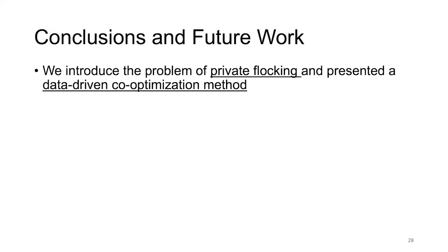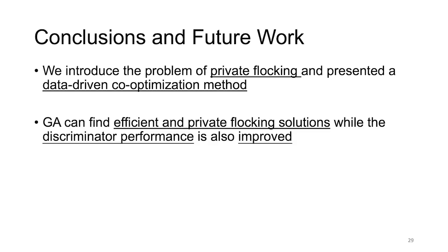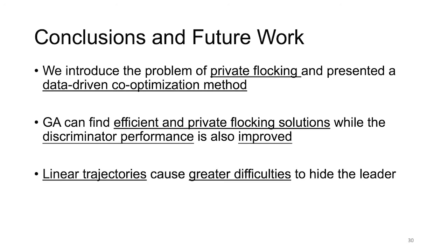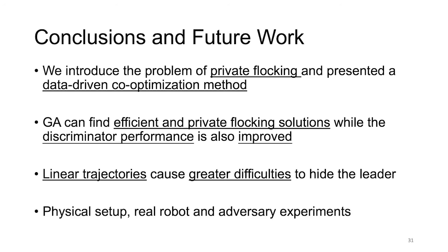To conclude, we introduced the problem of private flocking and presented a data-driven co-optimization scheme to generate robot controller solutions. Despite the large parameter space, a GA is able to find good flocking solutions, and including privacy does not appear to harm flocking convergence, yet it slows the process. The discriminator performance is also simultaneously improved. The genetic loss converges quicker for the sign reference trajectory. We postulate that the similar performance of chevron and line derives from the fact that they are both composed of straight lines, indicating it is more difficult to hide a leader along linear segments. In our future work, we intend to explore how the flock will behave in a physical setup with real robots and a realistic adversary. Thank you for listening.